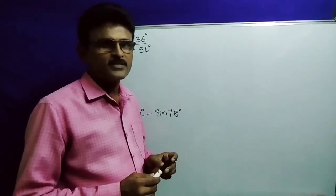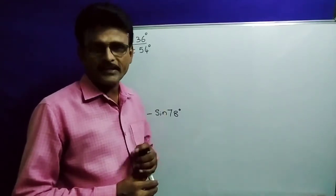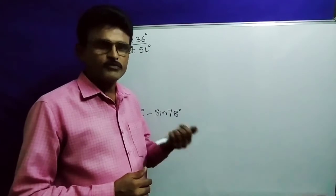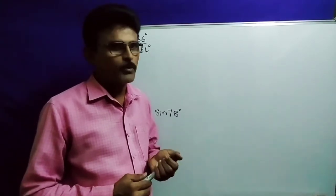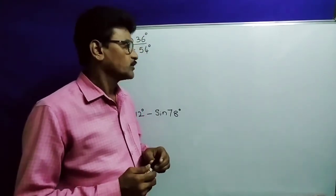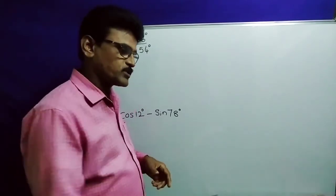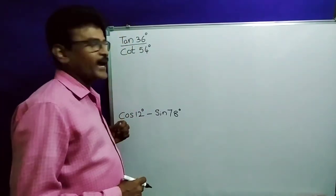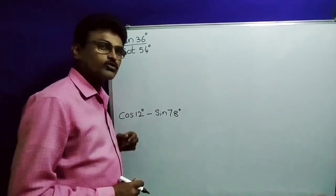Hi students, this is the 60th video on trigonometry. In the 50th video I explained trigonometric ratios of complementary angles and supplementary angles. Today we will solve problems on the formulas. First one: tan 36 divided by cot 54 — how to solve this problem?